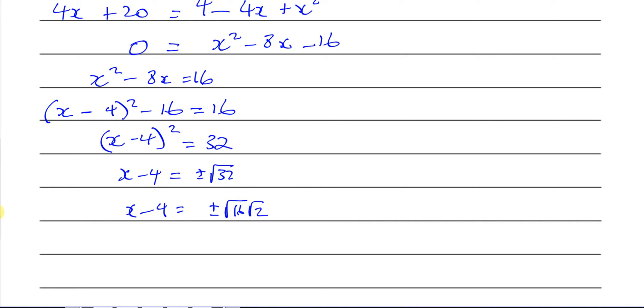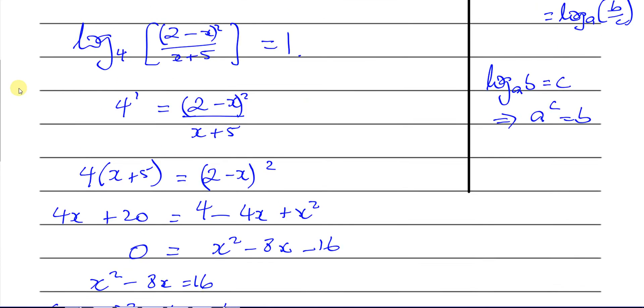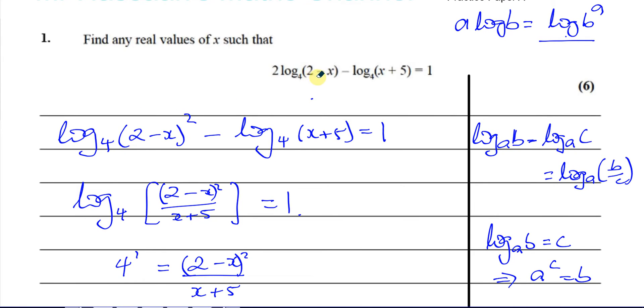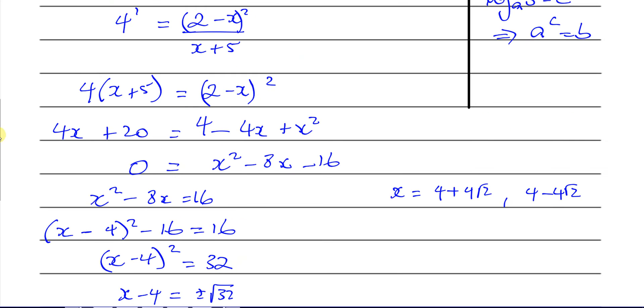So x - 4 equals plus or minus the square root of, now this is like 16 times 2, so you can write that in a simplified surd form. So x will basically equal 4 plus or minus 4√2. Now it would seem that that would be our answer, both of those, but we have to, when we're dealing with logarithms, remember the log of something, you cannot have the log of a negative number. Inside here must always be a positive number, so what we need to do is check to see are any values of our x, we have x is equal to 4 + 4√2 and we have 4 - 4√2.